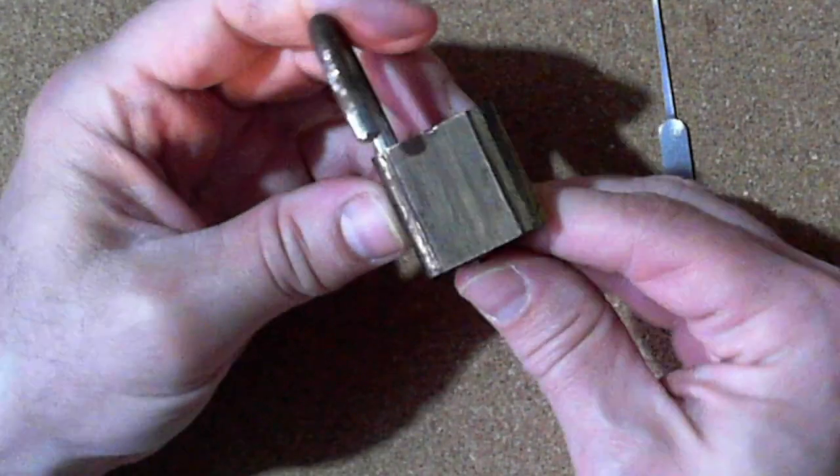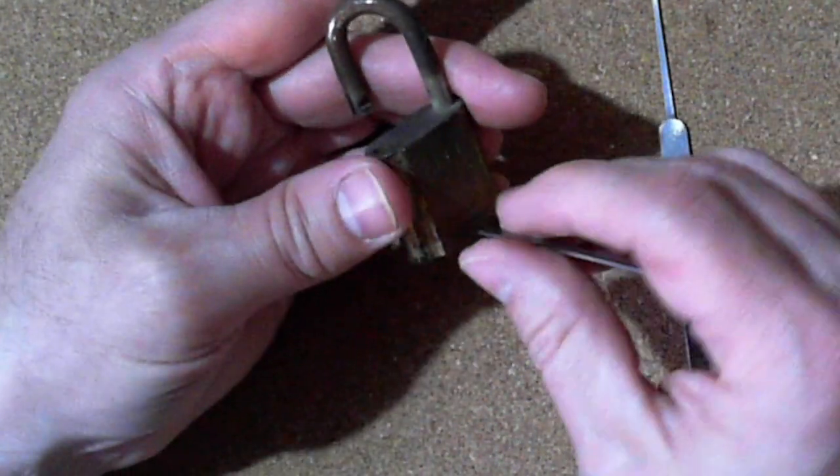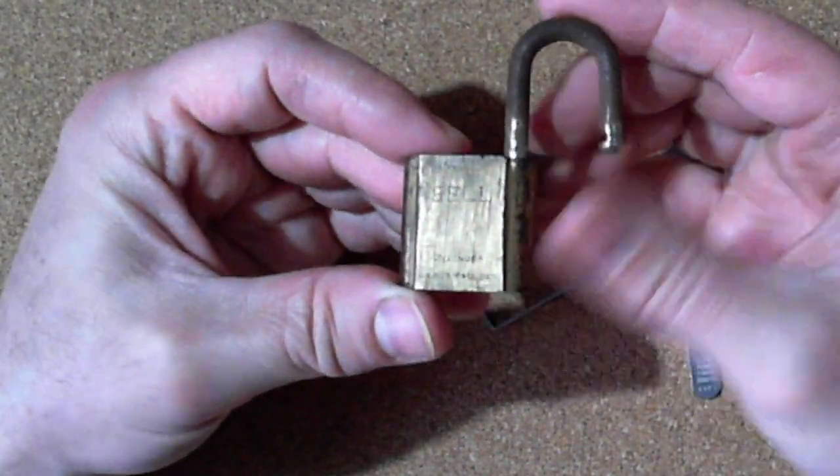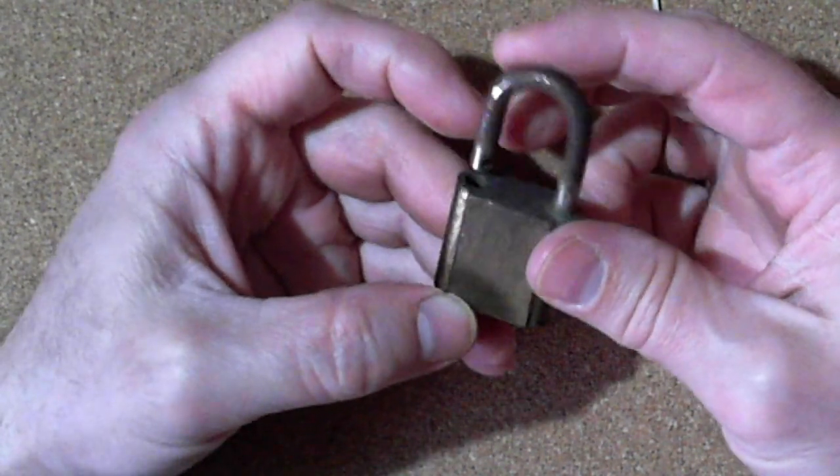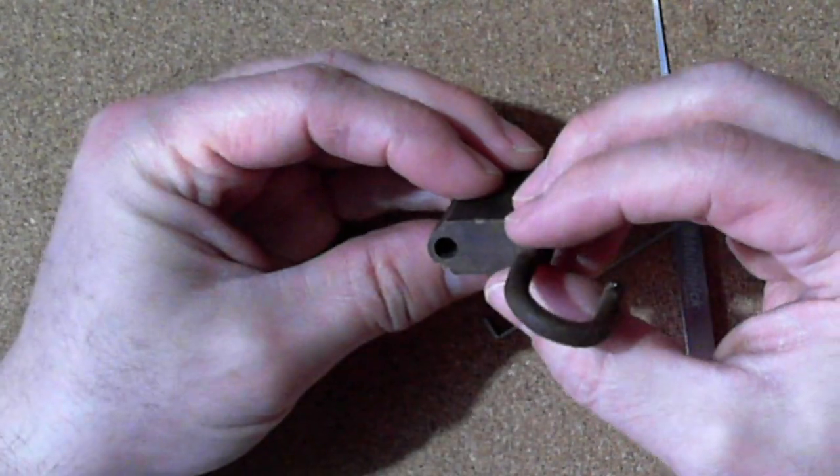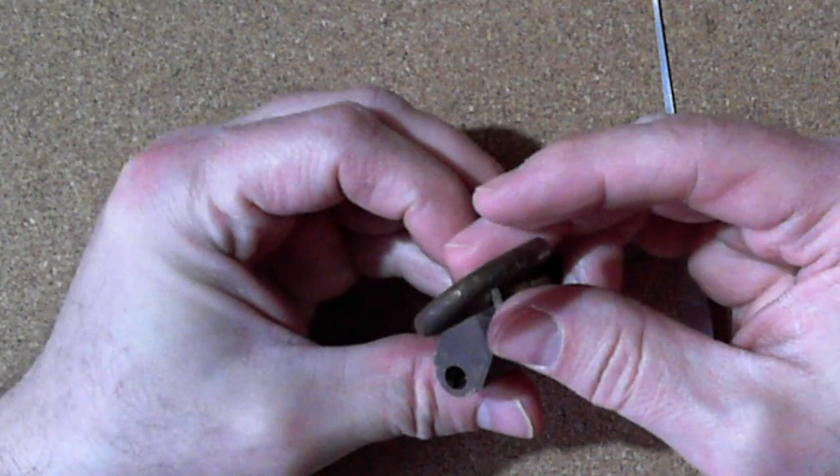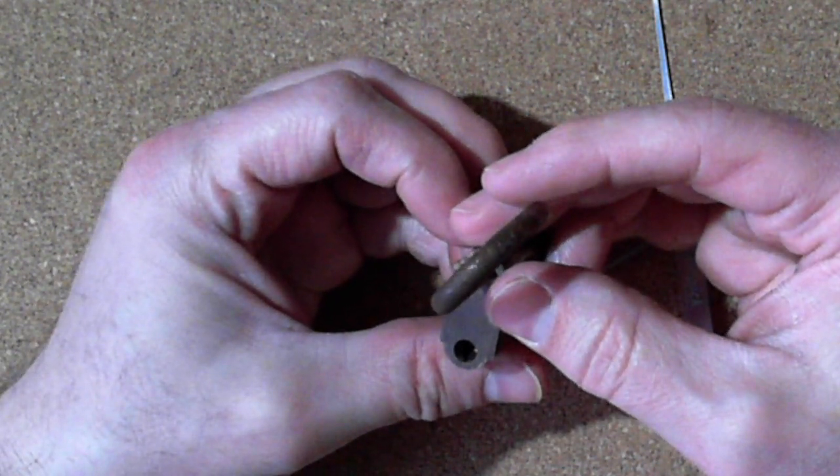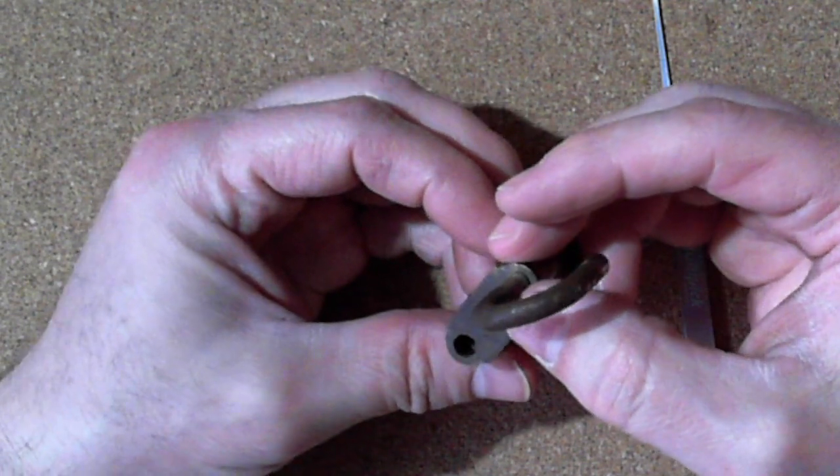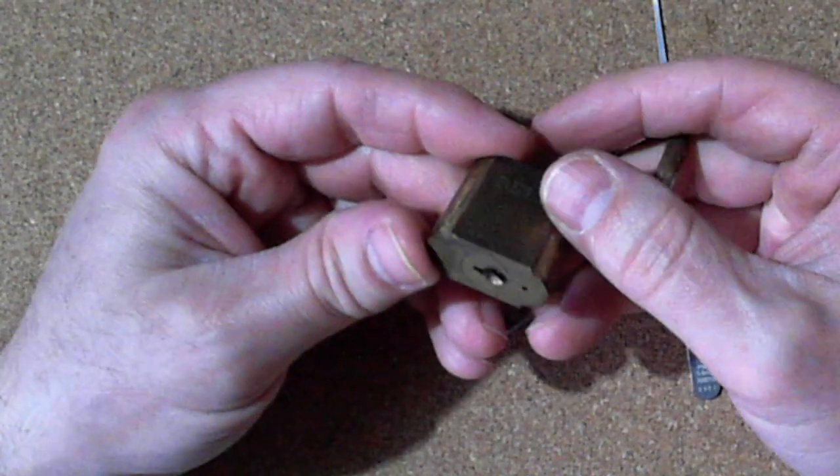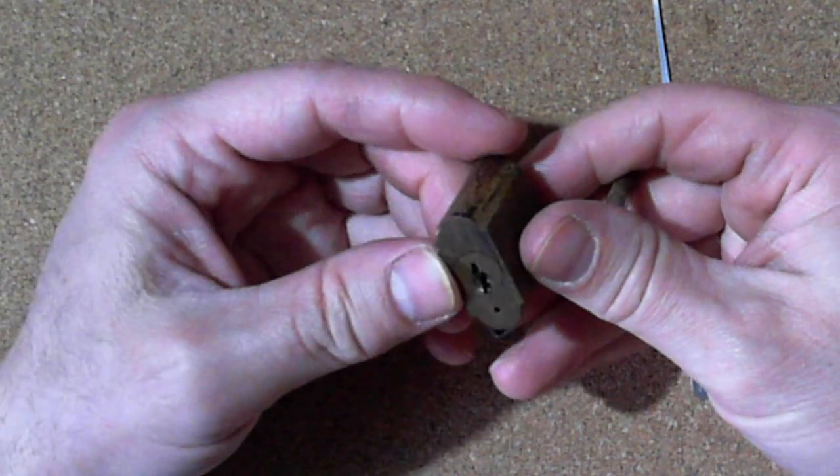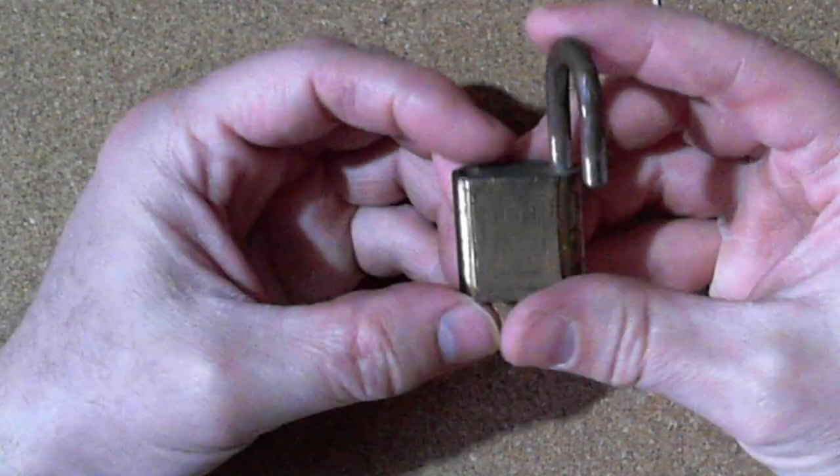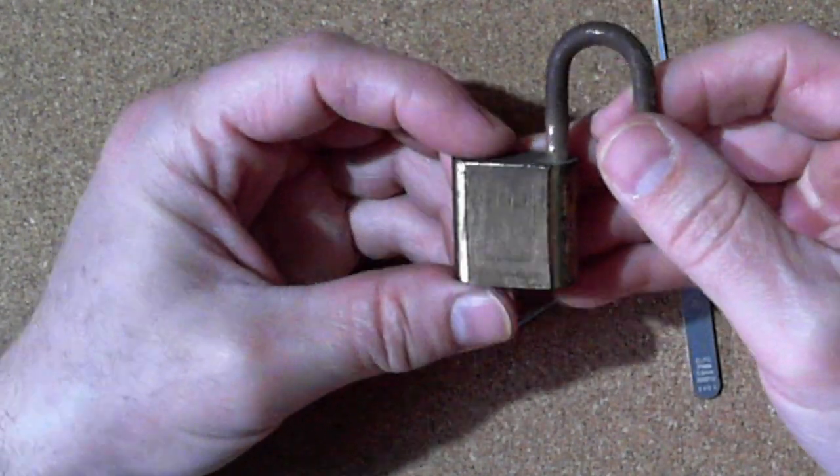Nice little Bell brass padlock picked open. Interesting - you can kind of see what looks like an allen screw down there, but I don't think this can be gutted. Well, there we have it, nice little Bell brass padlock picked open.